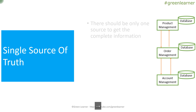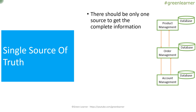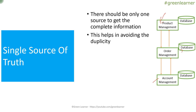The last principle is single source of truth. There should be only one source to get complete information. If you want product information, you use a product ID and ask Product Management — you get all the information. Same applies to Order Management with order ID and Account Management with account ID. No duplicate information about a product should exist in the Order Management database; if it needs product data, it must call Product Management. This helps avoid duplication of information — one service is the single source of truth.